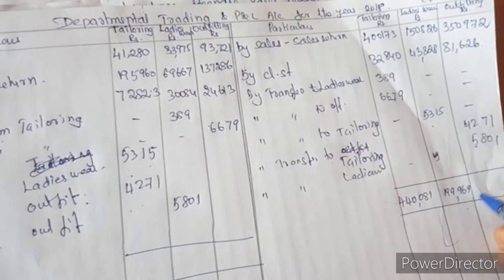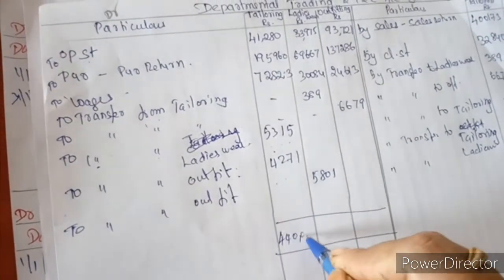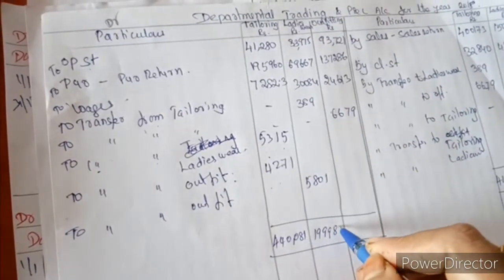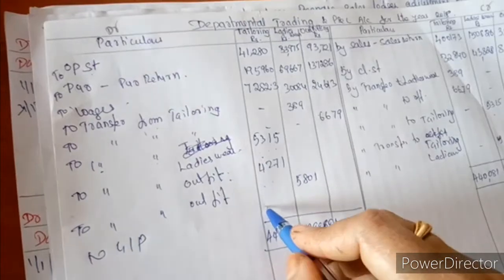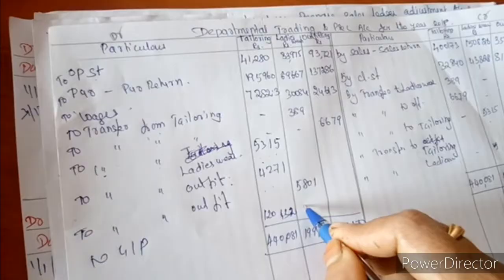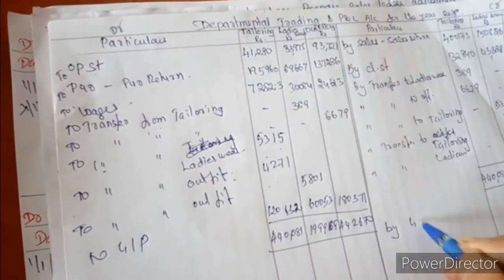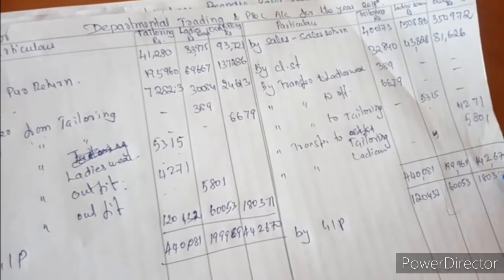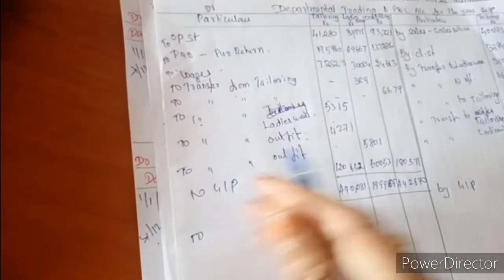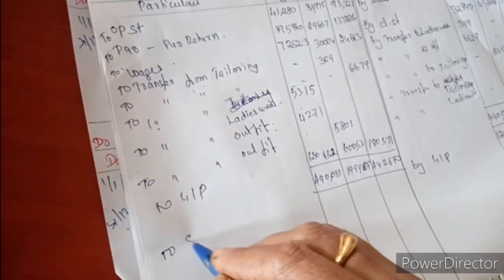Gross profit totals: Tailoring 4,40,081, Ladies Wear 1,99,969, Outfit 4,42,670. GP per department: Tailoring 1,20,432, Ladies Wear 1,20,432 — and Outfit 1,80,371. Now the common expenses allocated equally: Stationery, Postage, General Charges, Insurance, Depreciation. Stationery amount: 1,20,770.